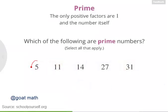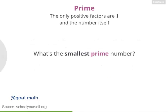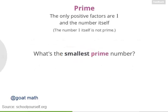Nicely done. So 5 is prime. 11 is also prime. 14 is not prime — 14 equals 2 times 7, so it has a few more factors. Similarly, 27 has factors of 3 and 9. And 31 is another prime number. So here's a fun question: what's the smallest prime number? And by the way, the number 1 itself is not considered to be prime.